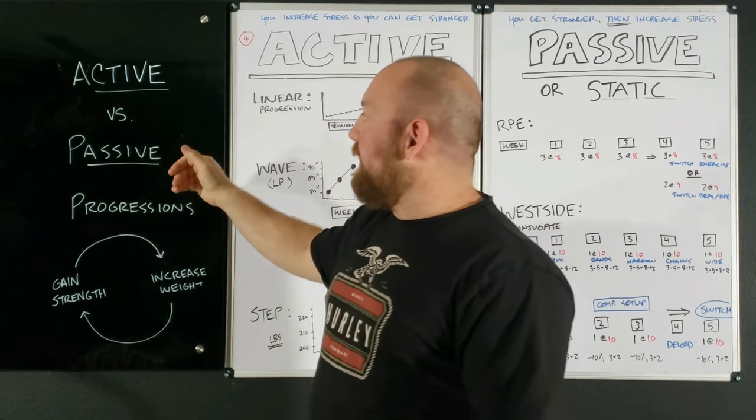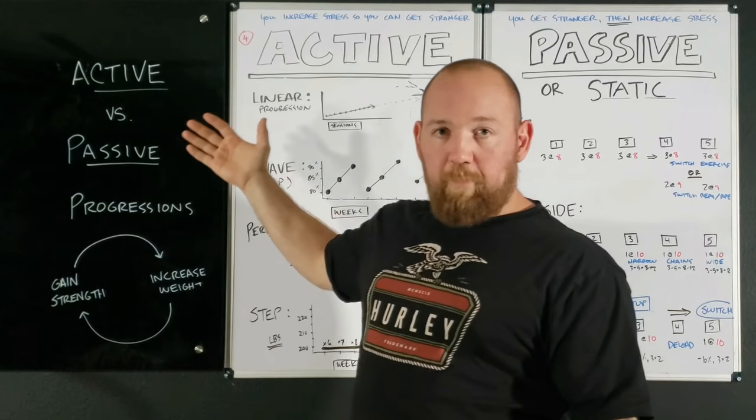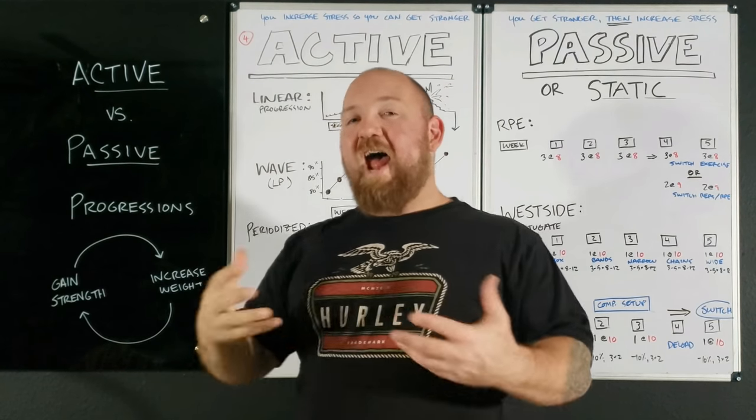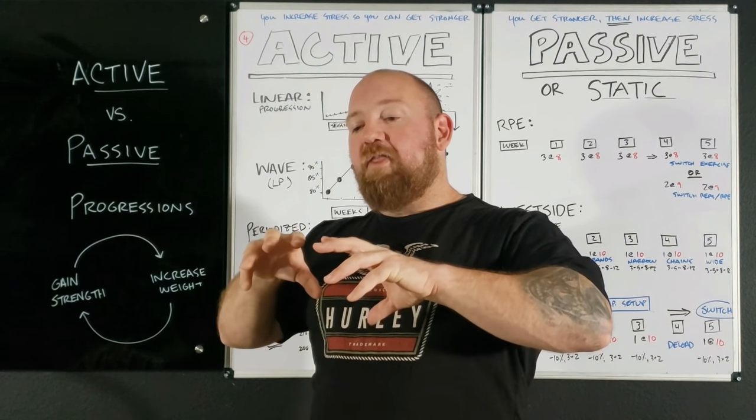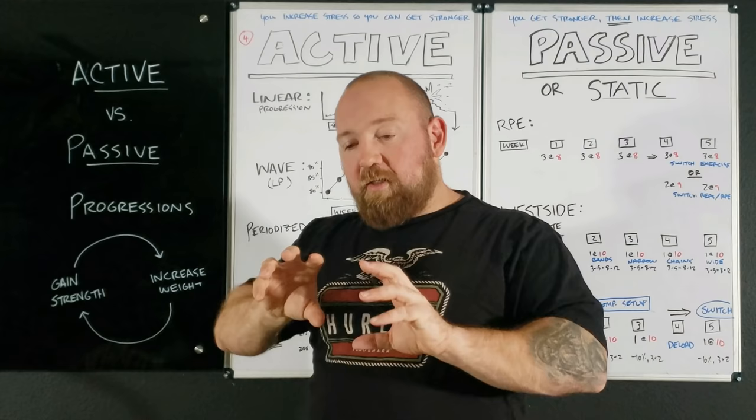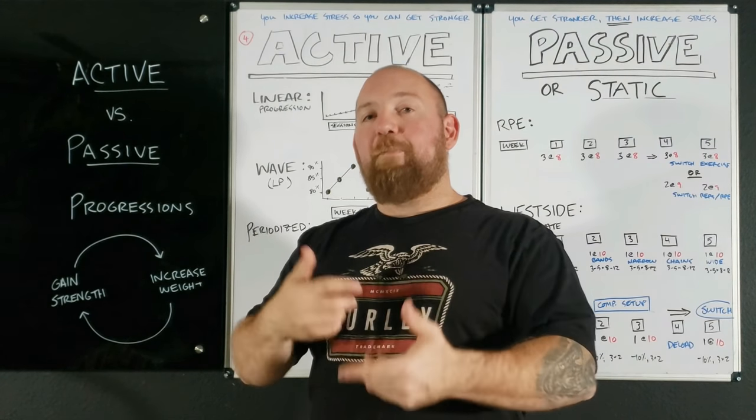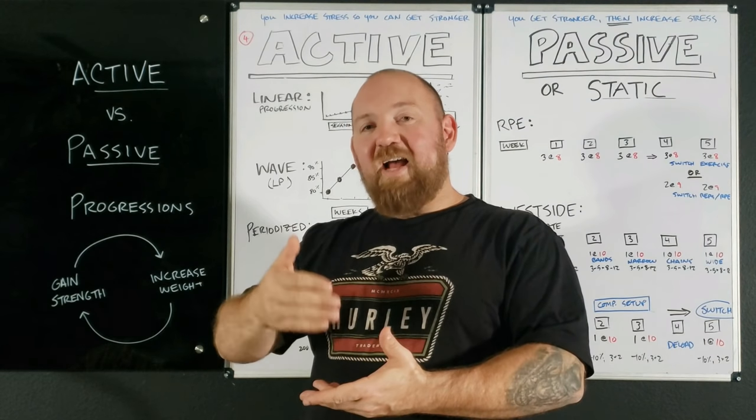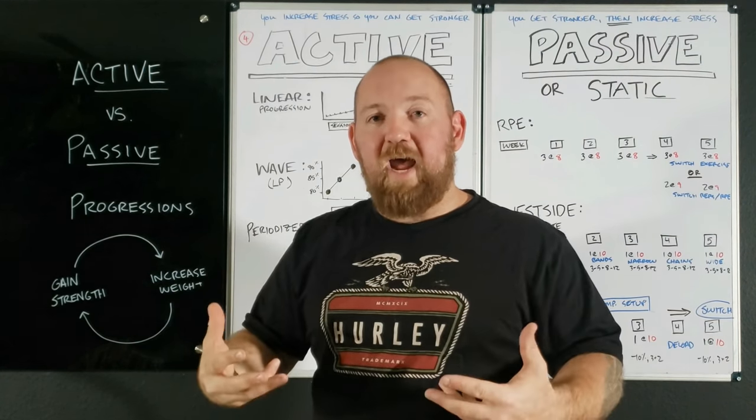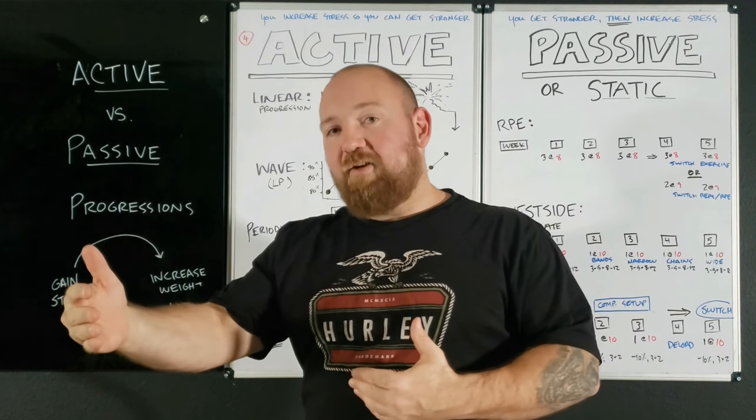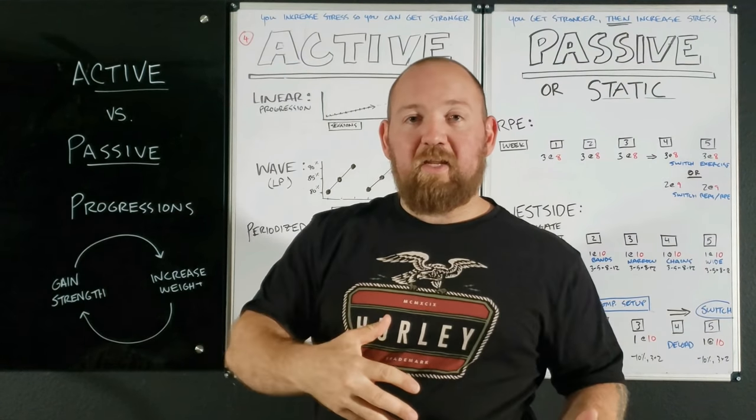With passive progressions, we're contrasting what normal progressions are, which are active. Active progressions move forward. You are using the mechanics of the program deliberately turning those dials up to get a predictable result. The idea is as you push those dials further and further, the result is the body is forced to adapt. So you actively progress forward, then you get stronger.